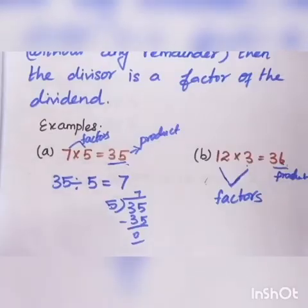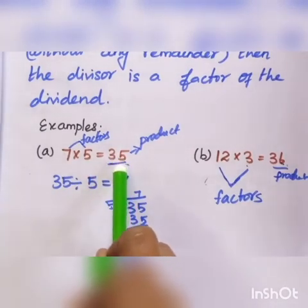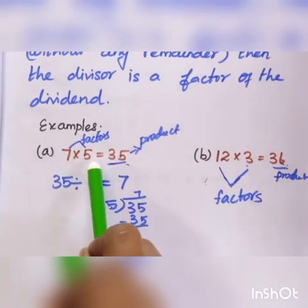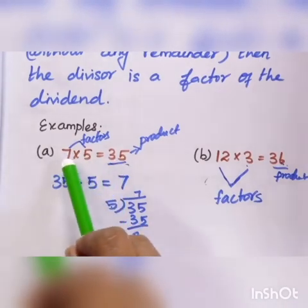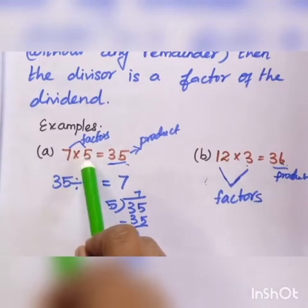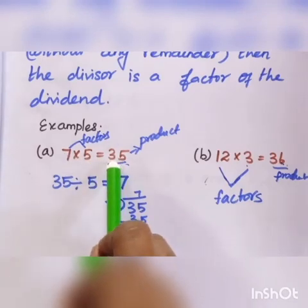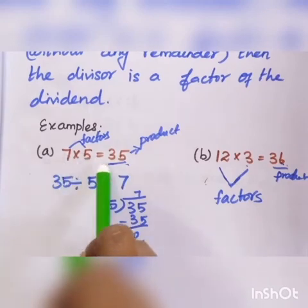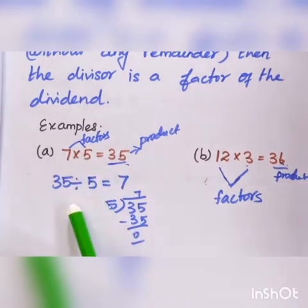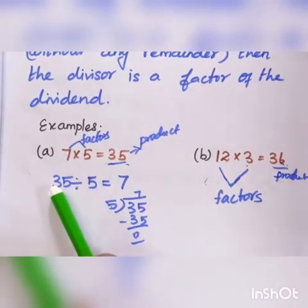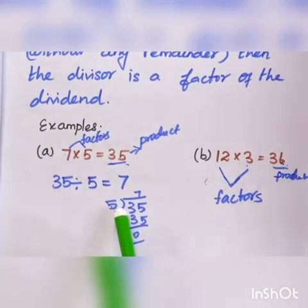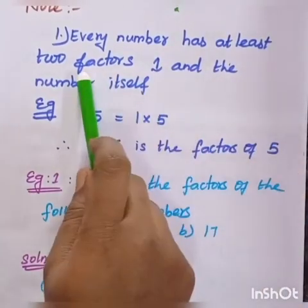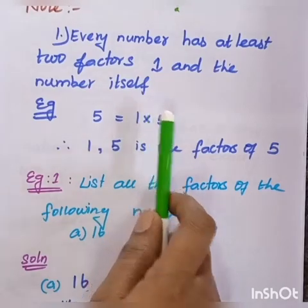For example, if we look at 7 times 5 equals 35, then 35 is the product. Here 7 and 5 are factors of 35. Definition: one counting number divides another number exactly without any remainder; the divisor is the factor. Every number has at least two factors: 1 and the number itself.